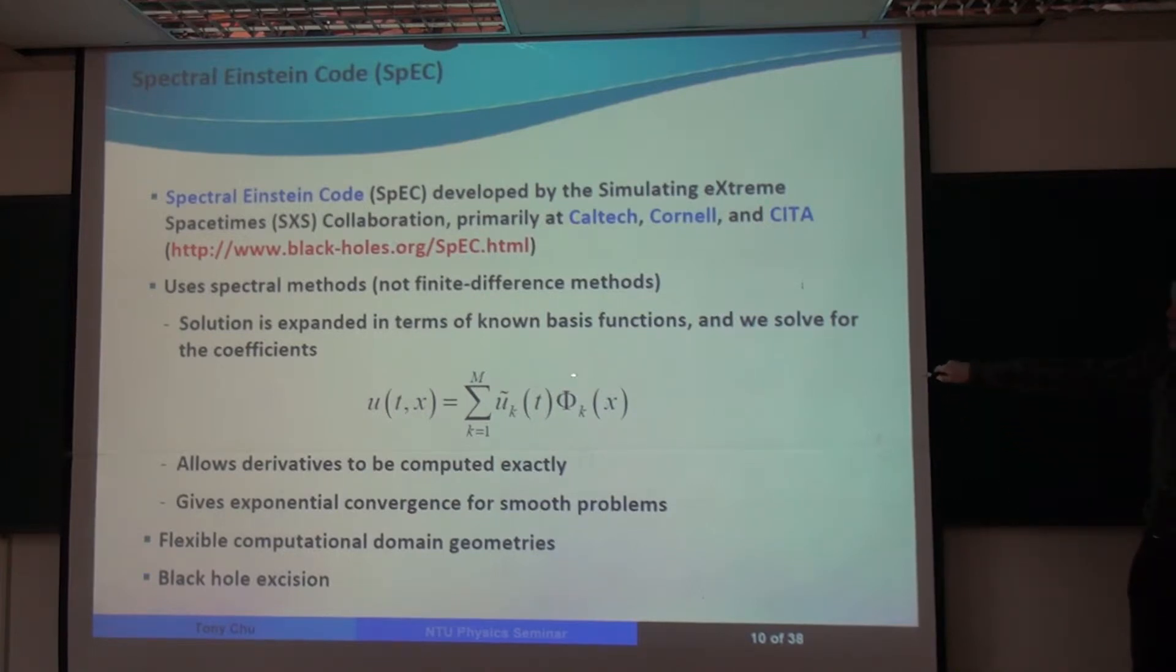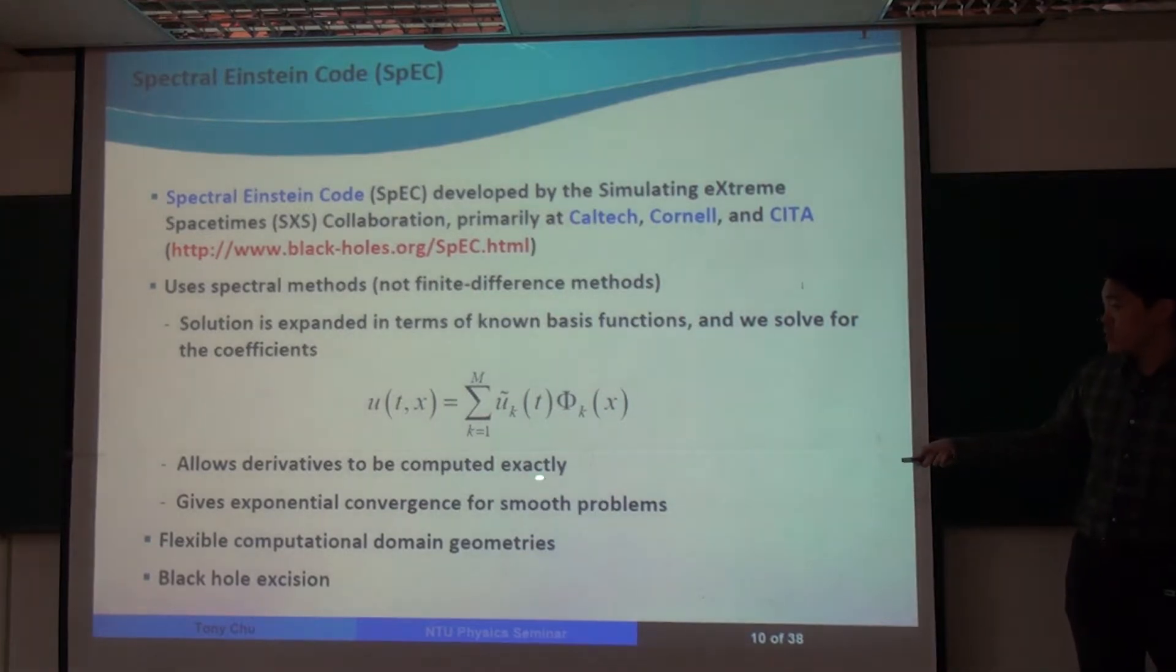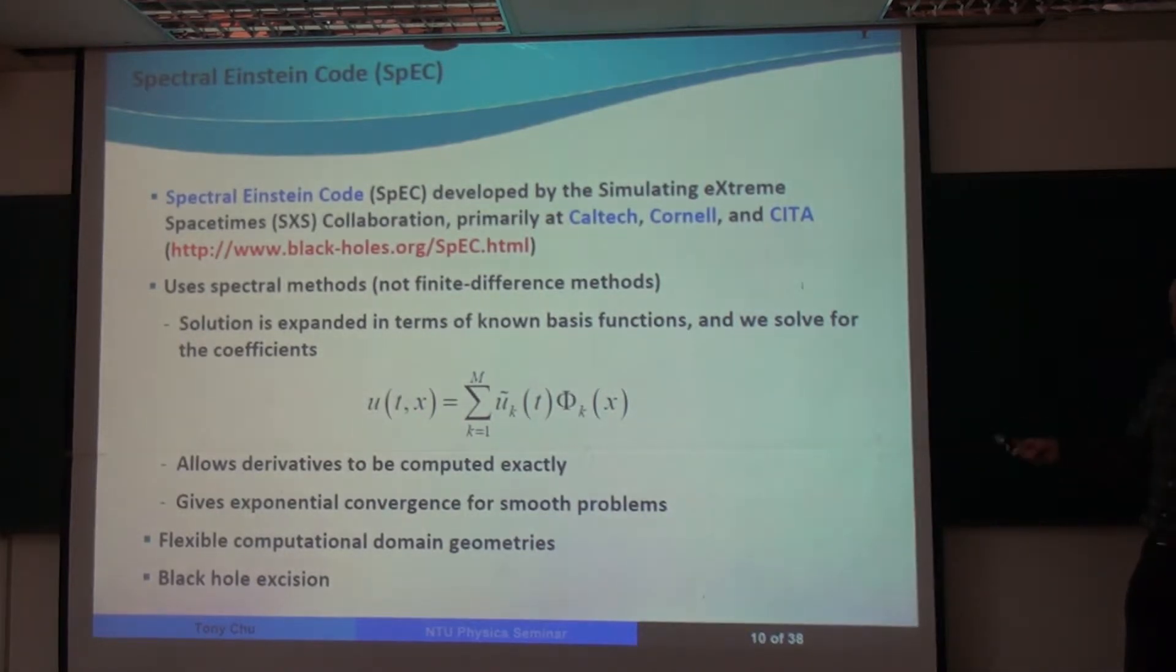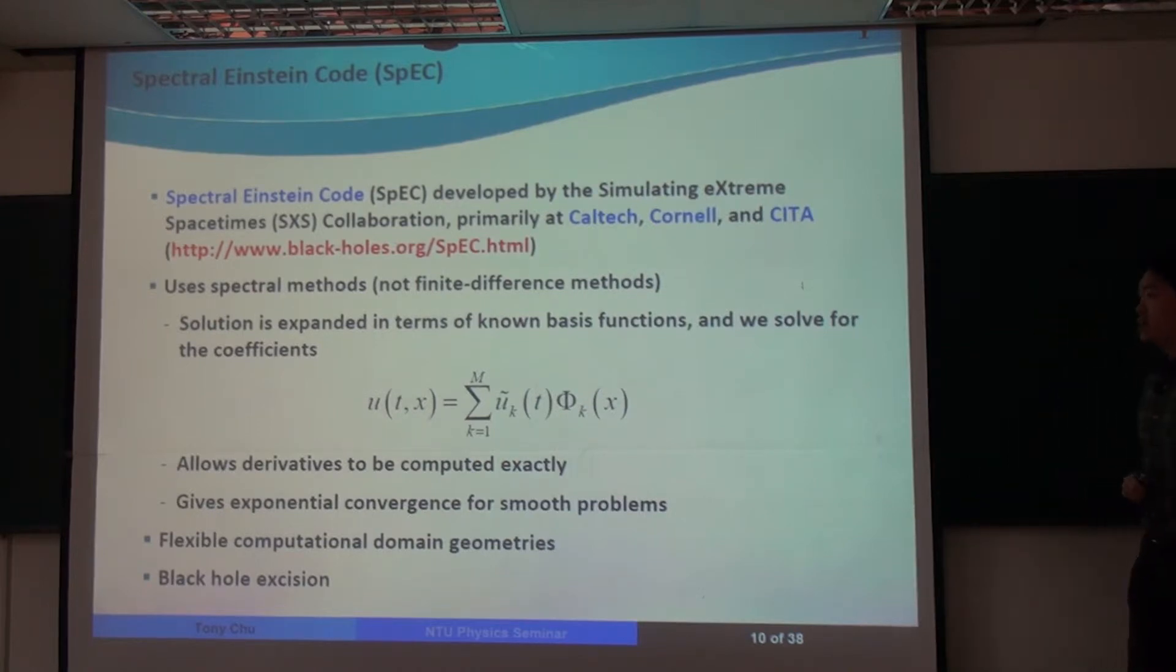And because we know these basis functions exactly, we can compute derivatives of our solution, u, exactly as well. So because of this nice property, it can be shown that if our solution is smooth, then this method, spectral methods, give exponential convergence. If you increase your numerical resolution, the error in your solution goes down exponentially. And this turns out to be rather well suited for the problem of binary black holes.